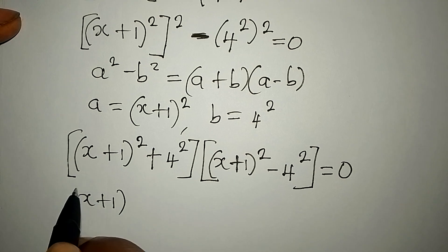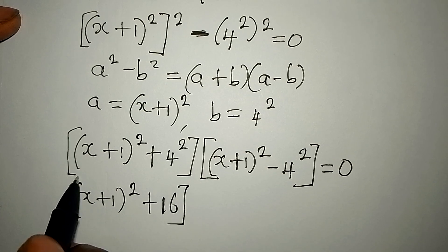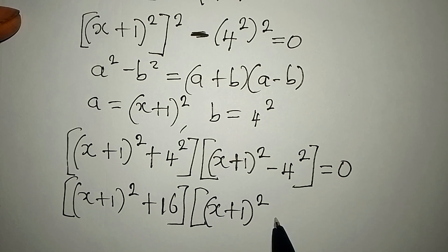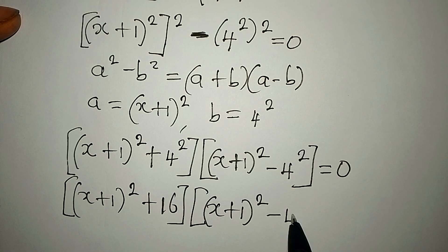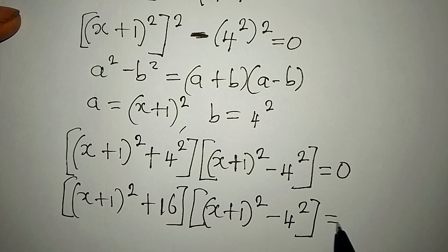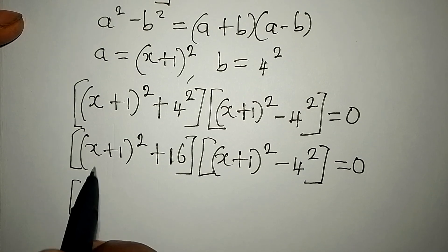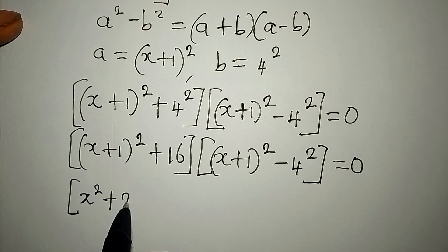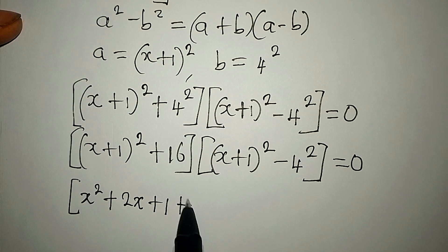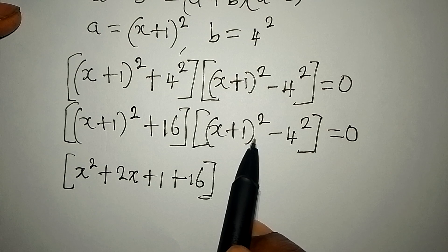From the first bracket, we have (x+1) squared plus 16 — 16 comes from 4 squared. In the second bracket, I have (x+1) squared minus 4 squared, because I want to apply the difference of two squares again. Expanding (x+1) squared gives x squared plus 2x plus 1.